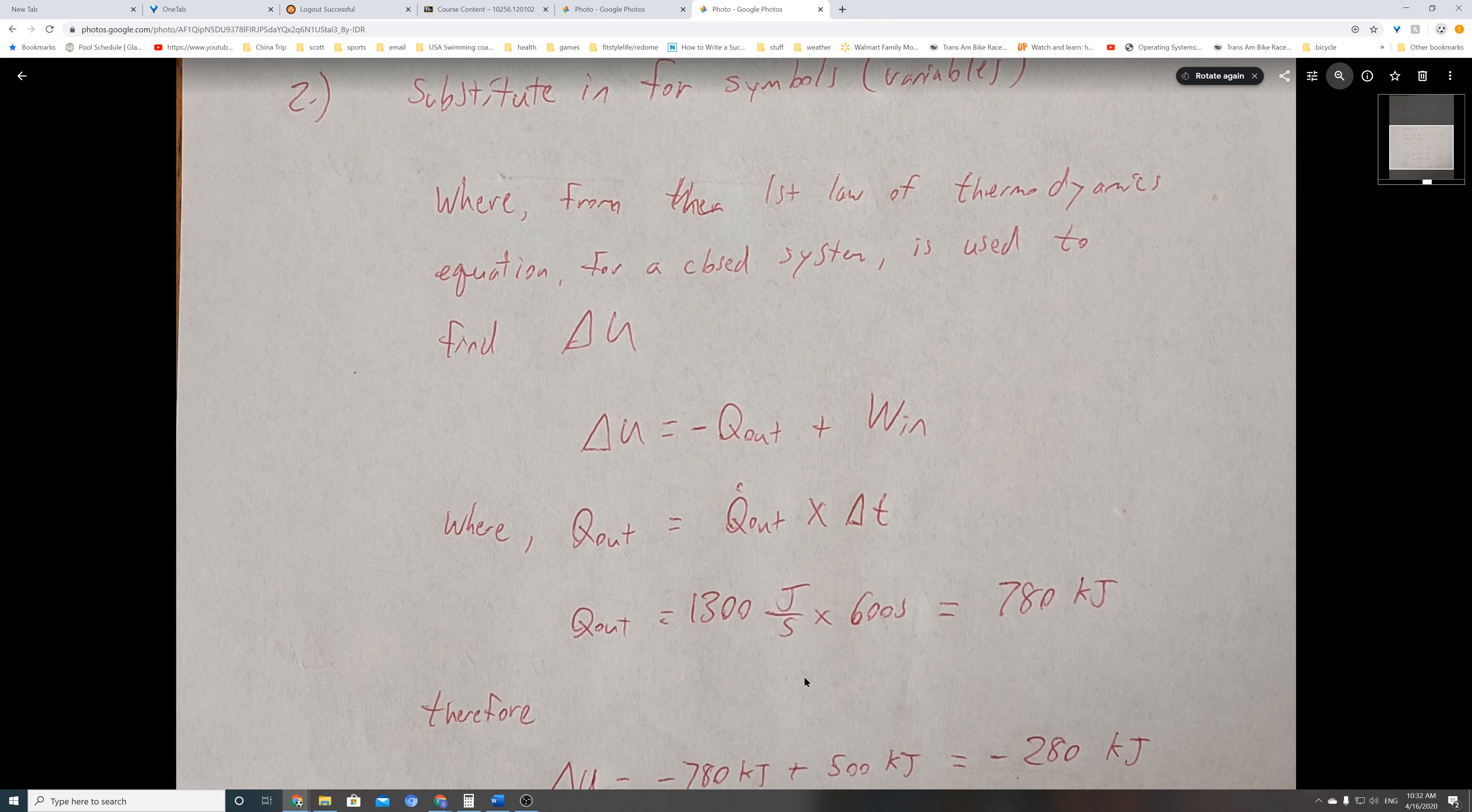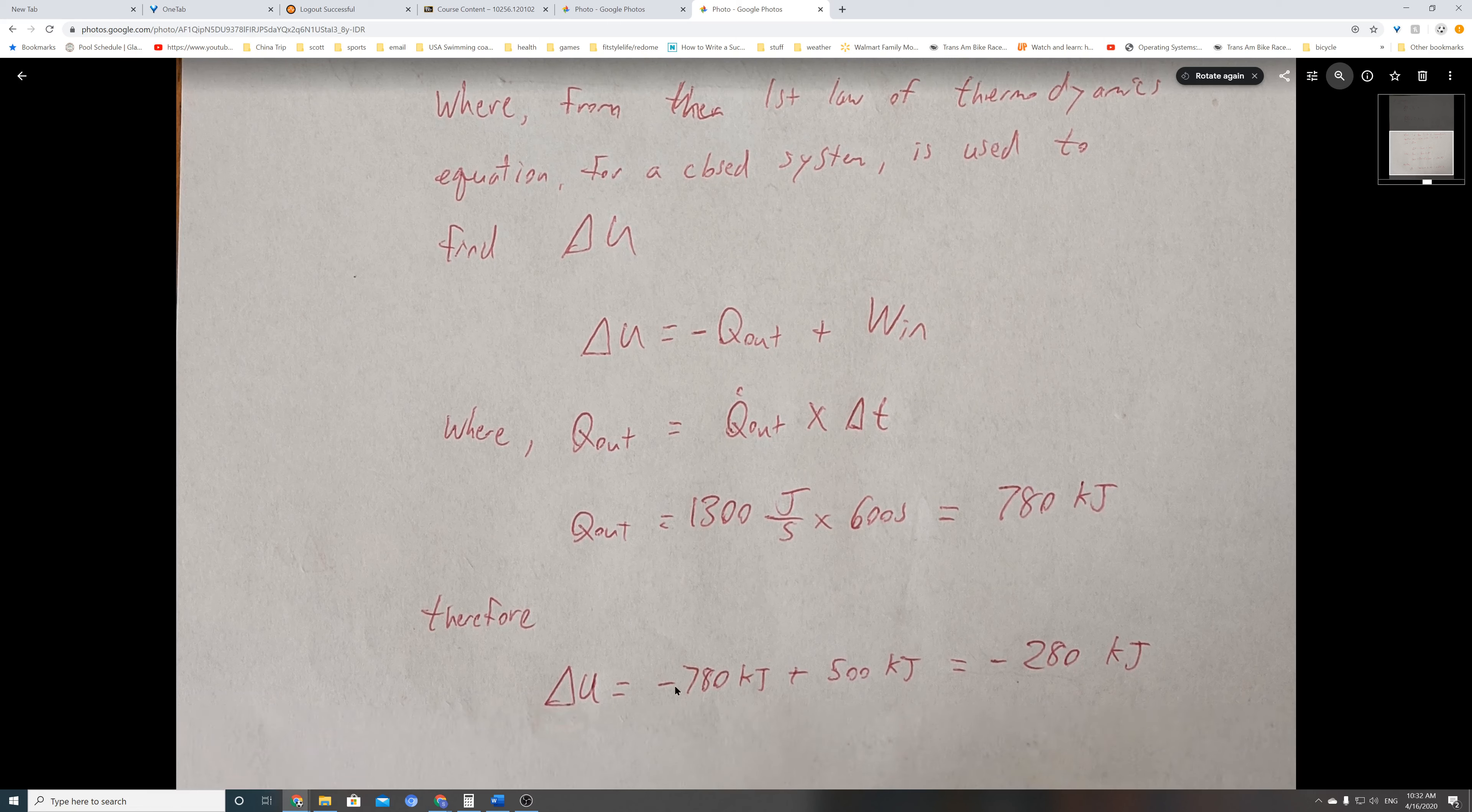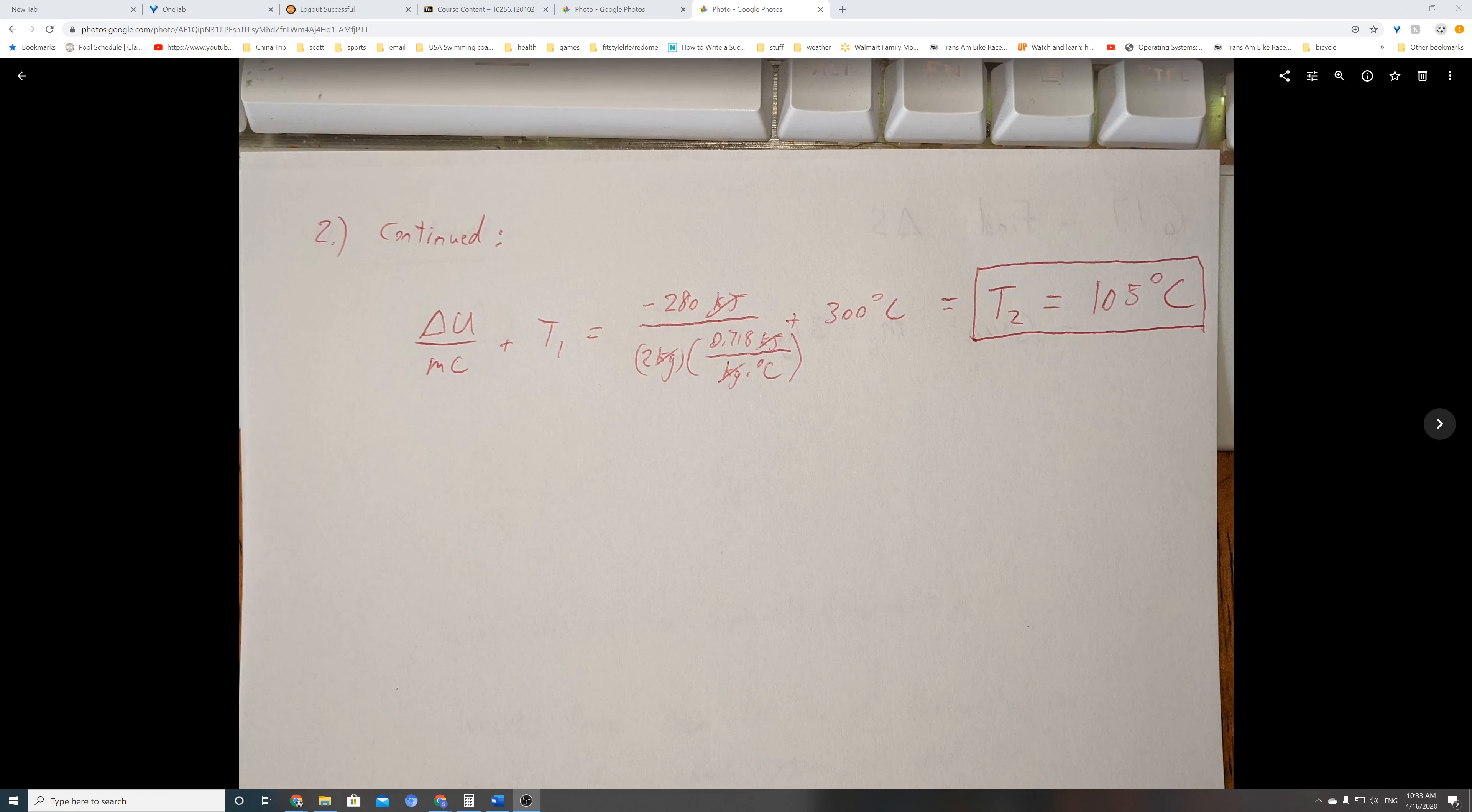Multiplying the rate at which heat's leaving times the time gives you the total amount of heat energy leaving the system. We substitute in those values and get minus 780 kilojoules plus 500 kilojoules. We recognize that the internal energy has also decreased, so we've used some of the internal energy to produce a work output. It's negative 280 kilojoules.